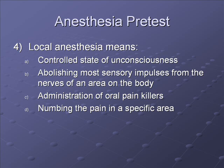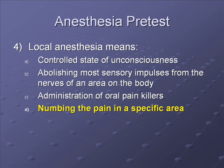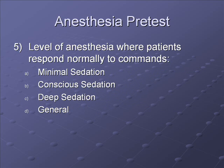Question 4: Local anesthesia means — A. Controlled state of unconsciousness, B. Abolishing most sensory impulses from the nerves of an area on the body, C. Administration of oral painkillers, or D. Numbing the pain in a specific area. Remember, local means local, so the correct answer is D. The anesthetic is injected in the specific area where the procedure is going to be done.